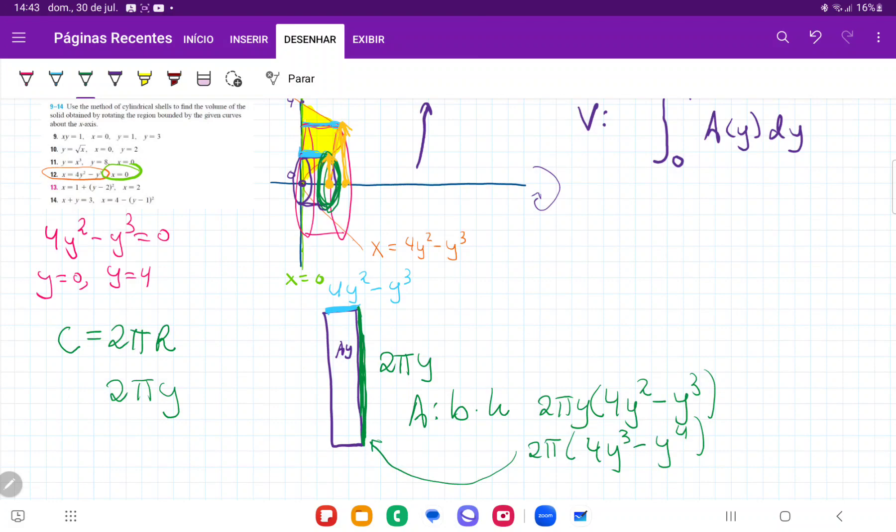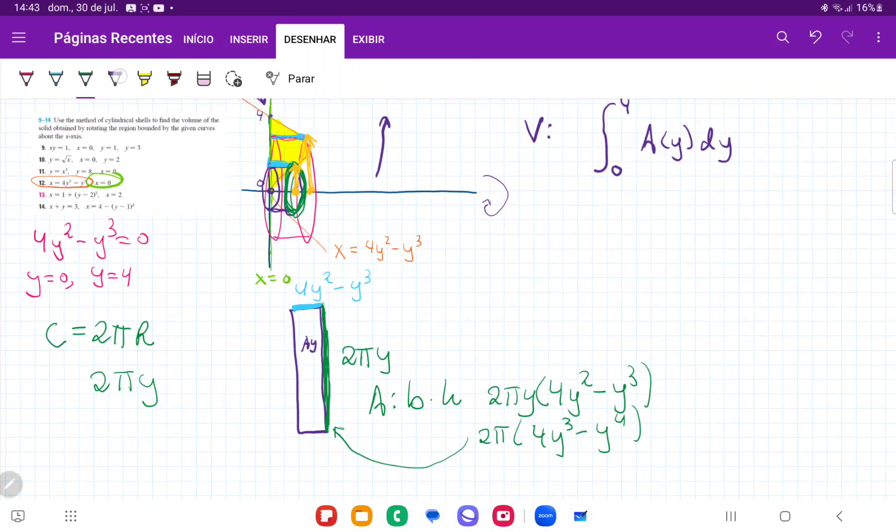This here gives me the expression for all these rectangles that wrap around the x-axis as I move from zero to y. So once we have this, we basically have an expression for my volume.